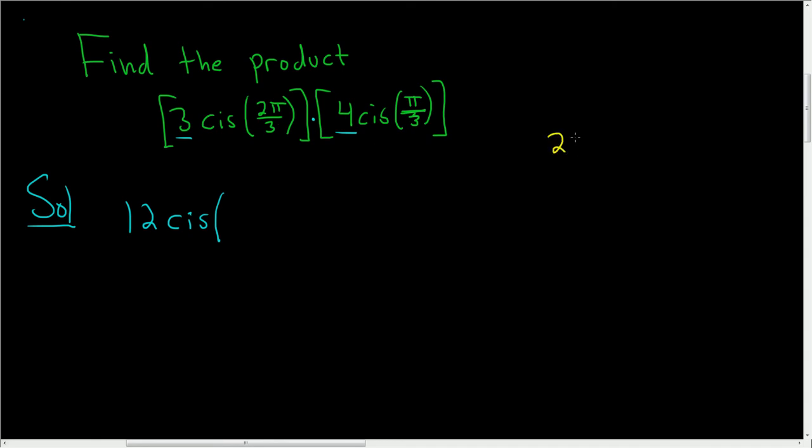So let's do it over here, let's see 2π over 3 plus π over 3. So that's 3π over 3, which is just π. So this is just the cis of π.